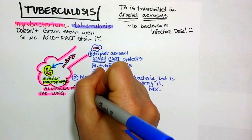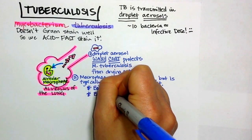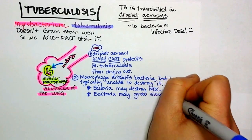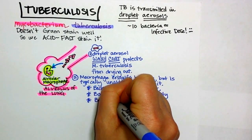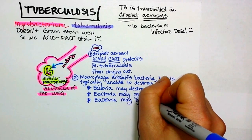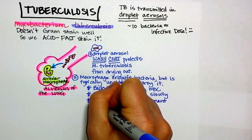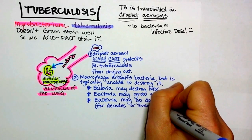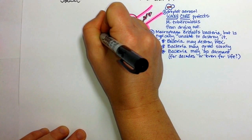But a lot of people have a strong enough immune system that they're able to inhibit the mycobacterium from going anywhere else. So maybe the bacteria can grow slowly — that's a second option. Or the bacteria may be so inhibited by our immune system that it goes completely dormant. This could actually happen for the rest of someone's life.